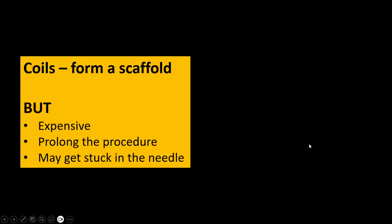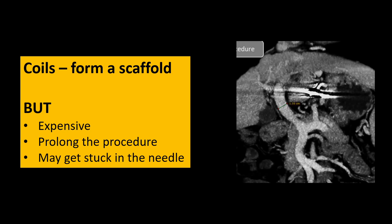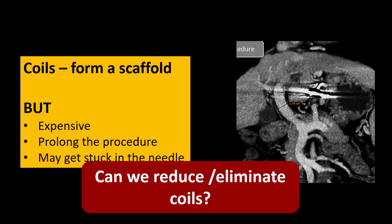Coils form a scaffold, but they are expensive — each coil costs 10,000 rupees and we may need three to five, or even up to seven or eight for a large varix. This can prolong the procedure as each coil must pass through a large needle, and very occasionally they may get stuck in the needle. As a transplant hepatologist, I also encounter a problem where a coil placed at the lesser curvature varix makes hilum assessment difficult due to the starburst artifact of the metallic coils.